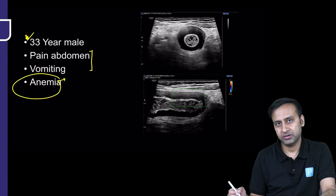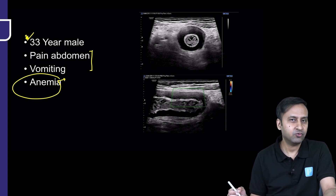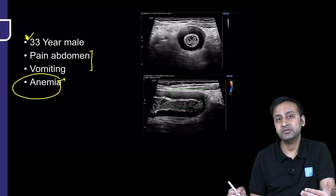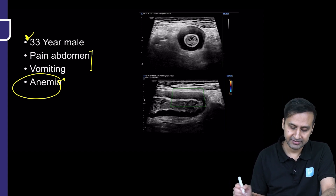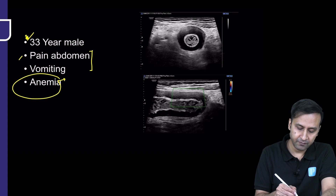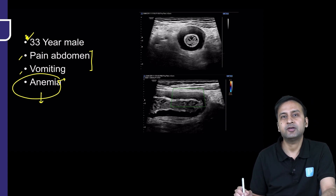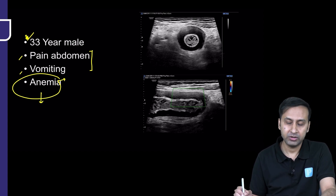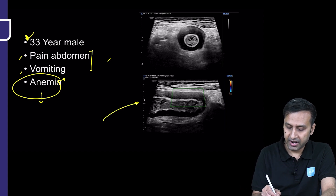Anemia is one of the very consistent findings with small bowel disorders. It can be seen in intestinal tuberculosis, ulcerative colitis, inflammatory bowel disease like Crohn's, and malabsorption syndromes like celiac disease. So if you have a combination of abdominal pain, vomiting, and anemia, there is always high suspicion of something wrong with the bowel.